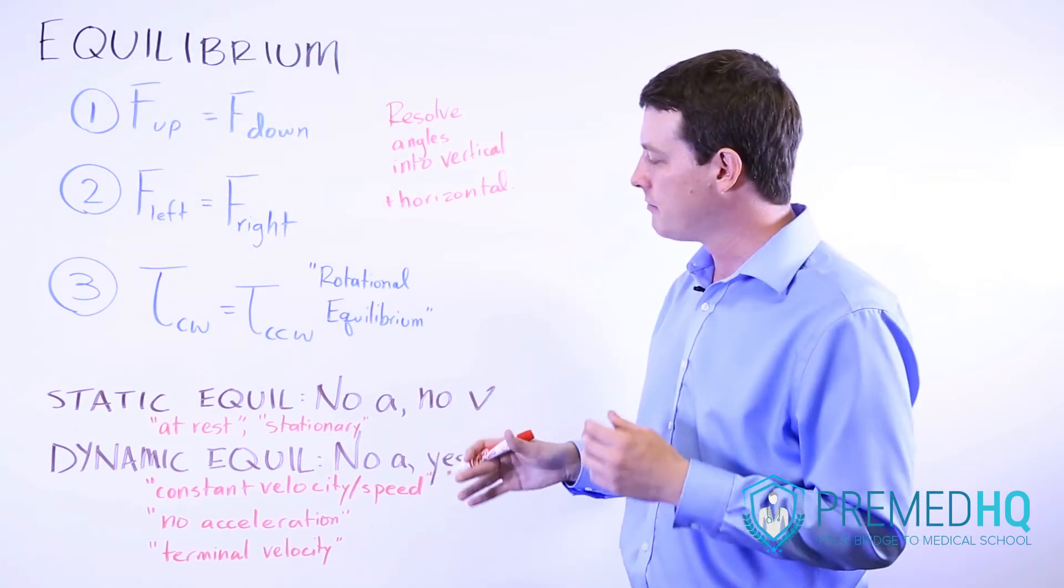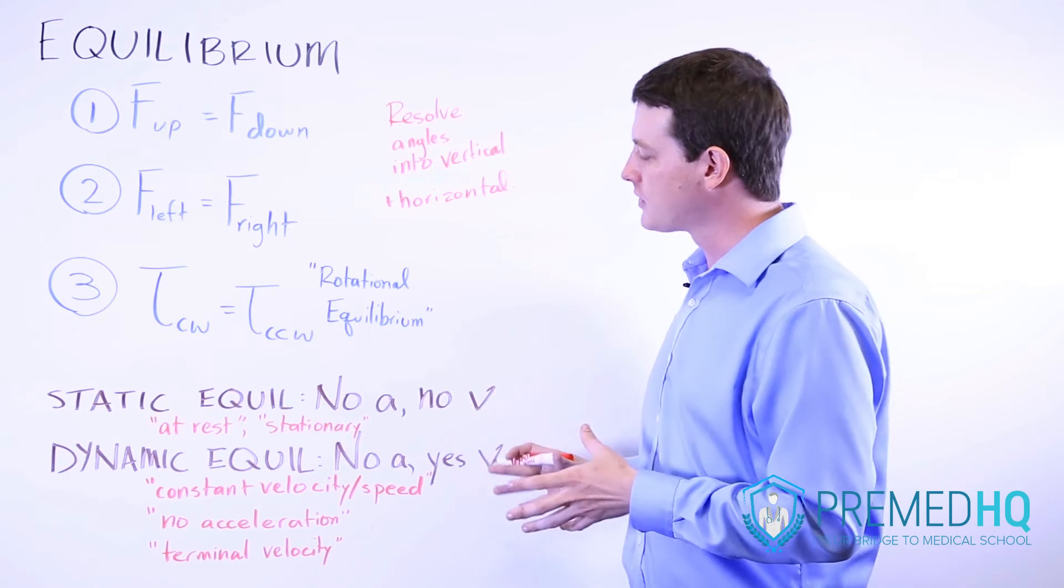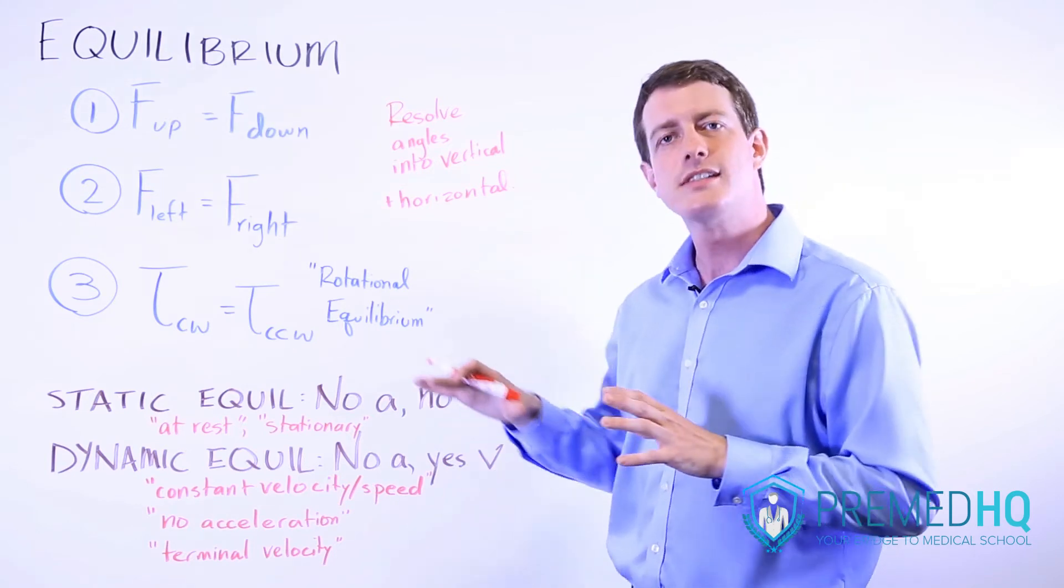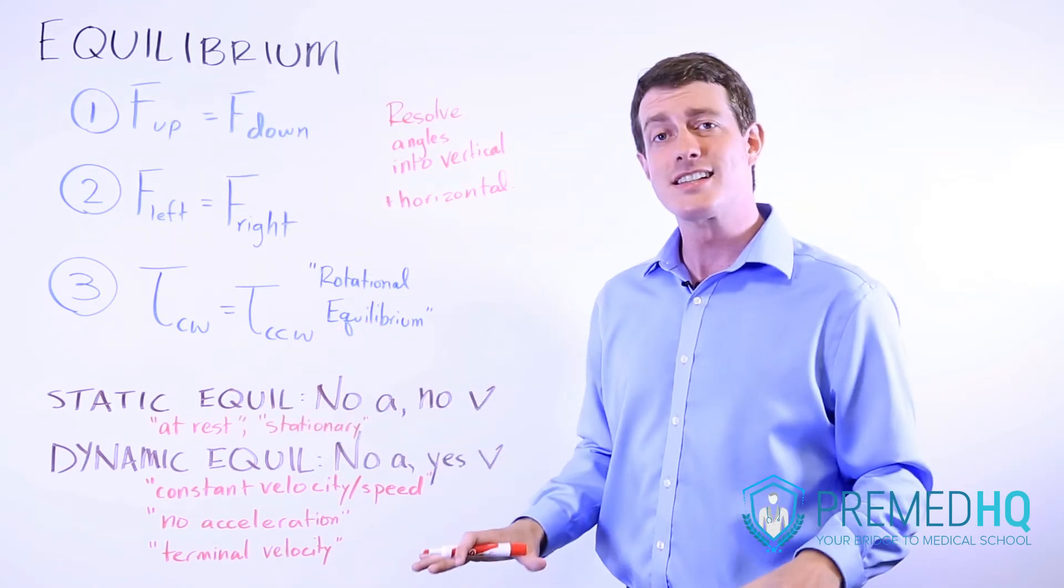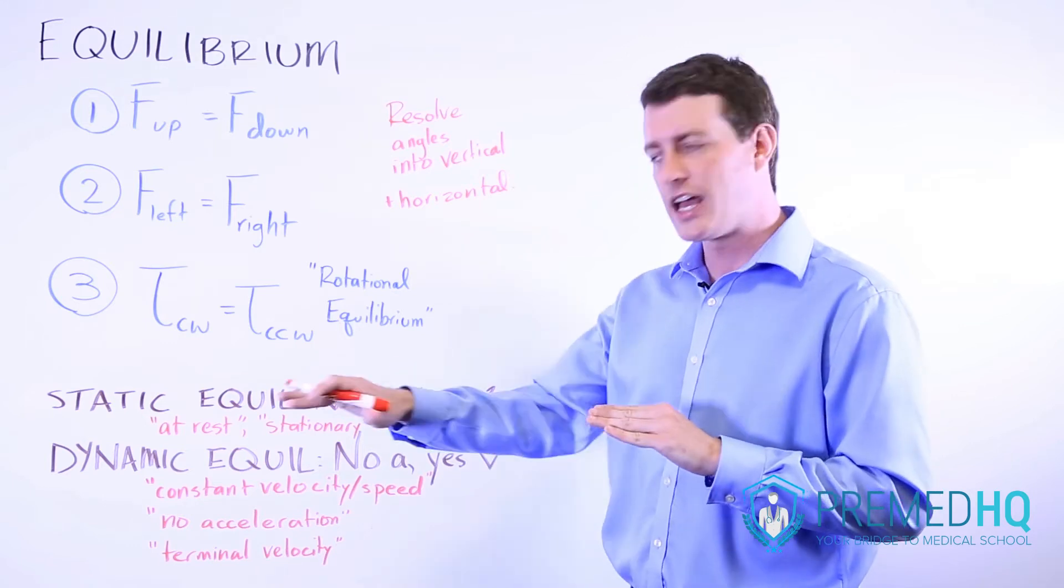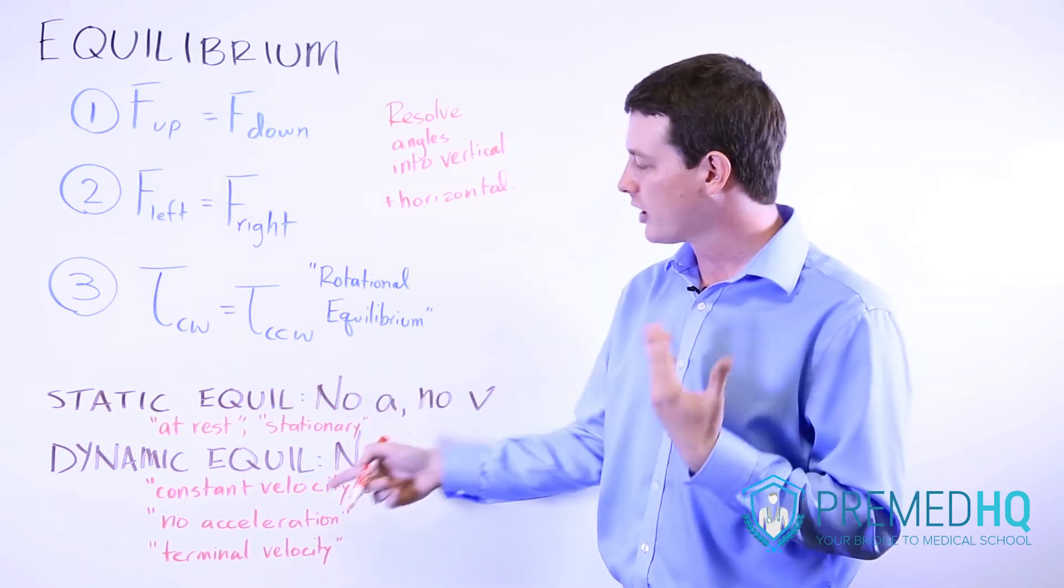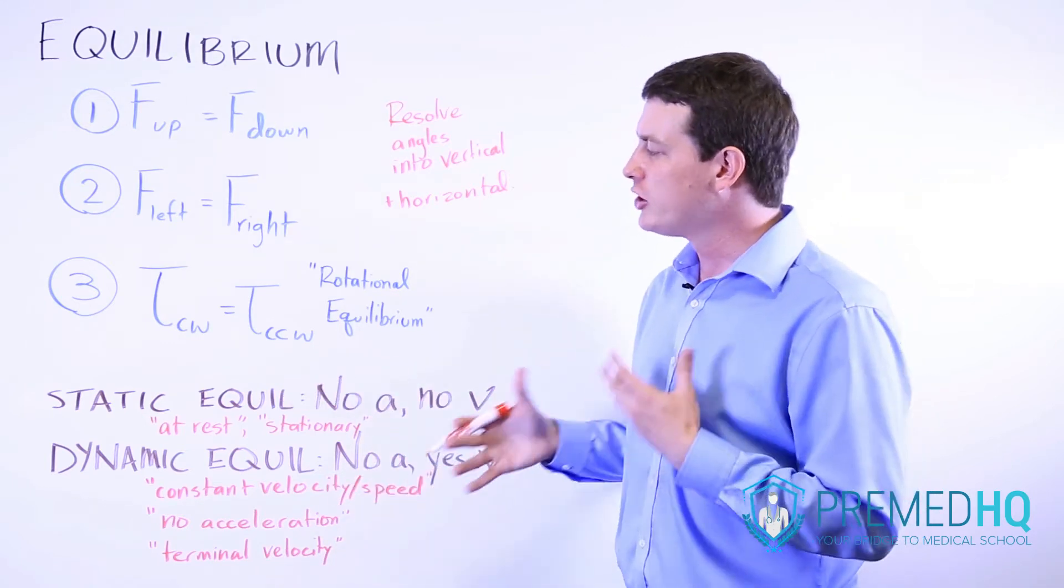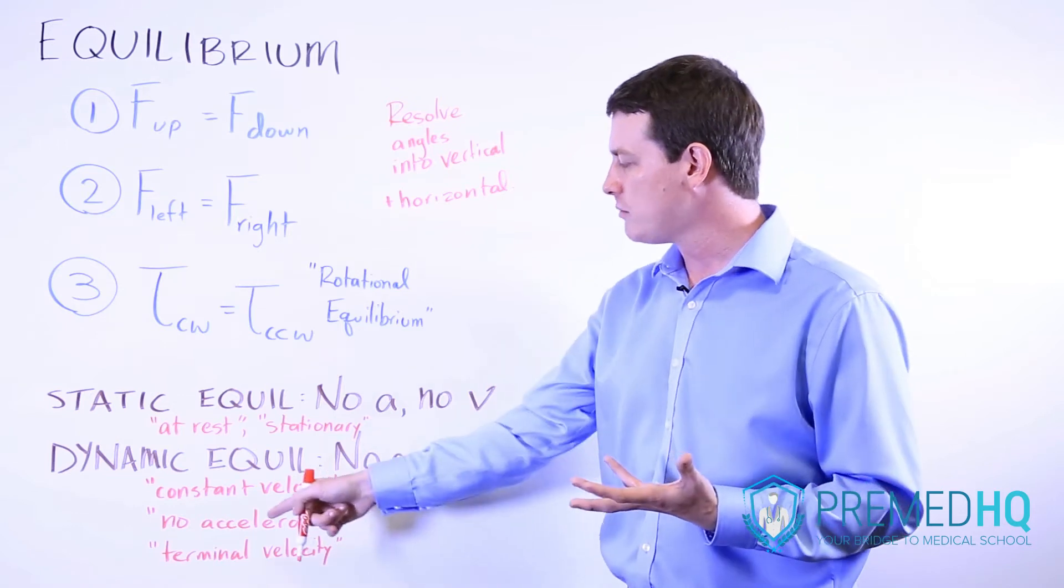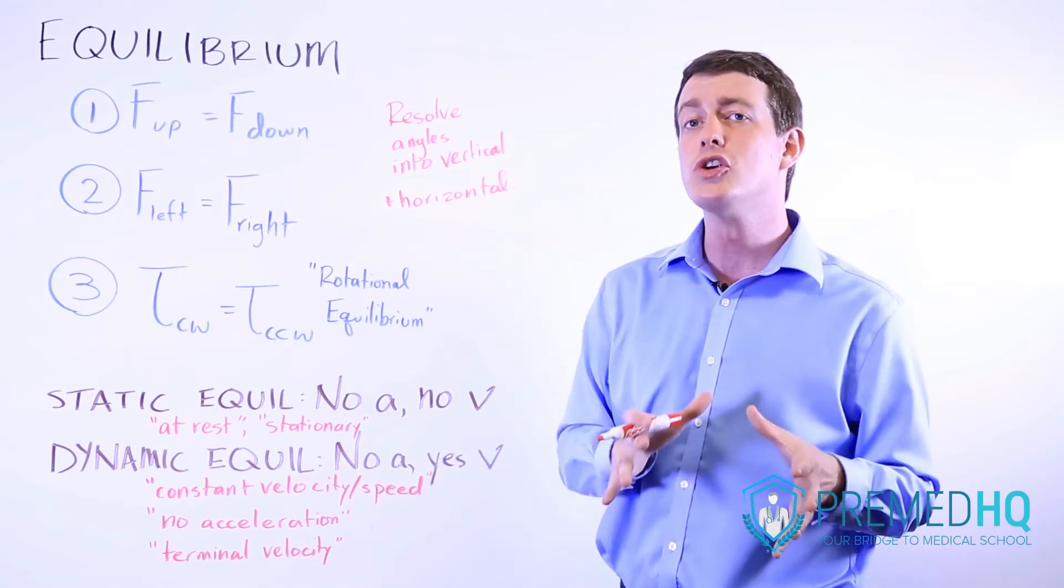Dynamic equilibrium is one that often confuses students because the object does have velocity, but it isn't accelerating. That means it is moving at a constant speed or a constant velocity.